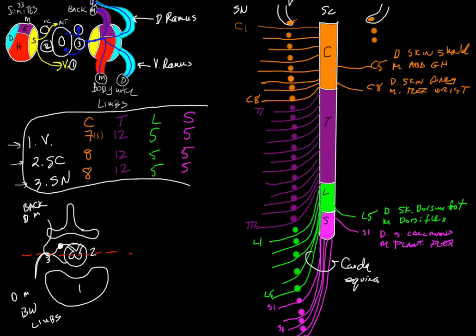There are numerous different dermatomes and myotomes, but they all follow this exact same pattern: a sclerotomal or vertebral component that surrounds the spinal cord segment, which then has nerves that come off at that level to form myotomes and dermatomes through the dorsal and ventral ramus. If you know that pattern, it makes understanding this diagram a whole lot simpler.